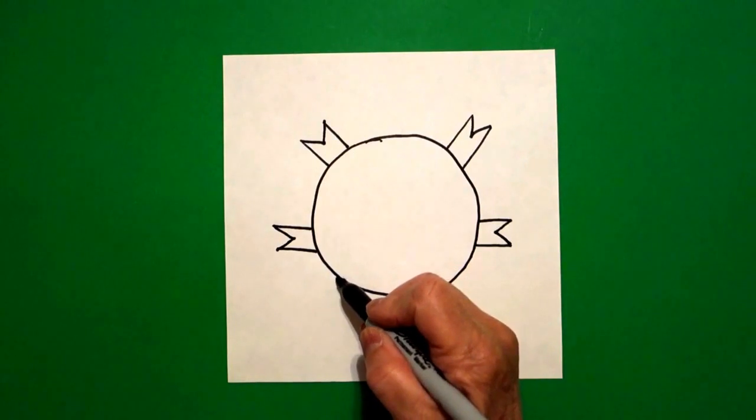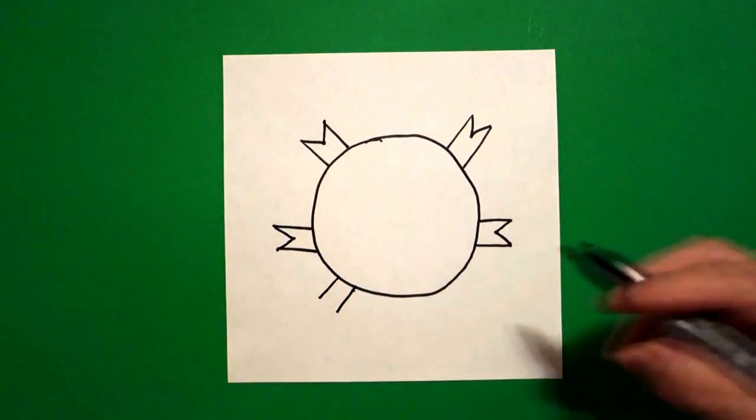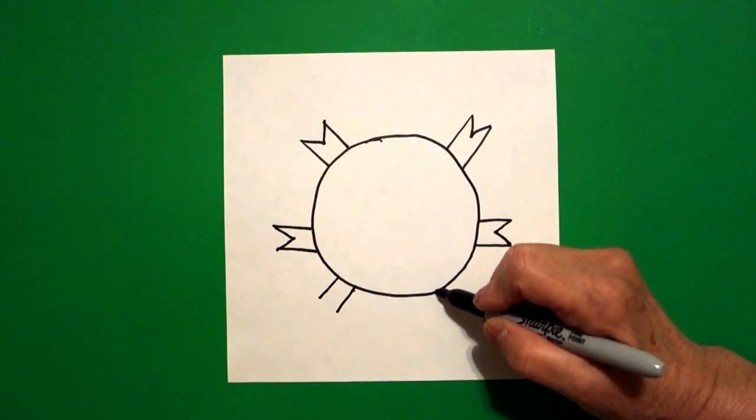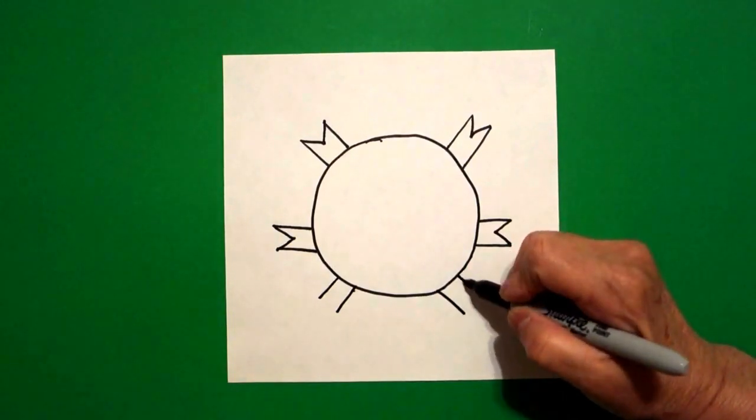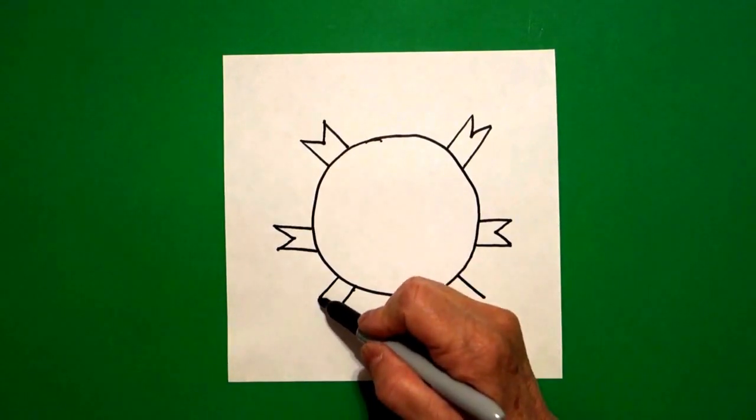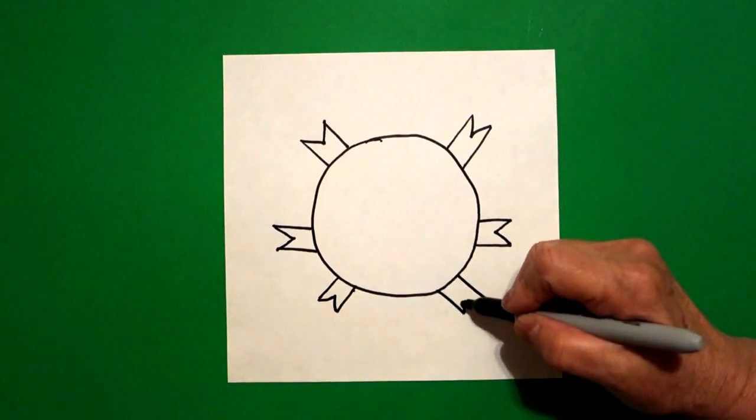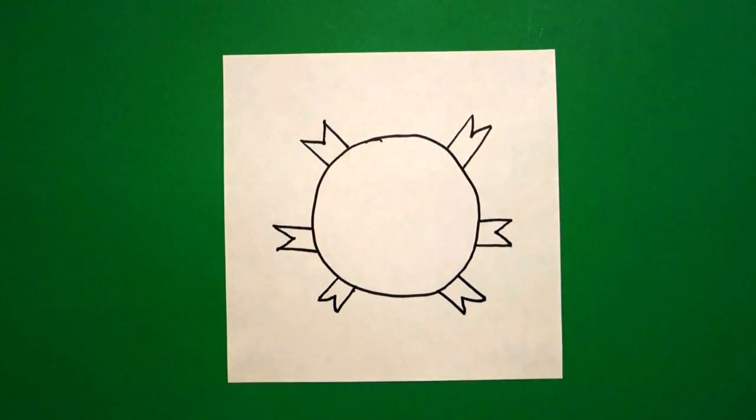Now come down again on the left hand side and draw one, two straight lines. Jump over on the right hand side, one, two straight lines. Come back to the left, draw a straight diagonal in, straight diagonal line out. Come on the right, straight line in, straight line out.